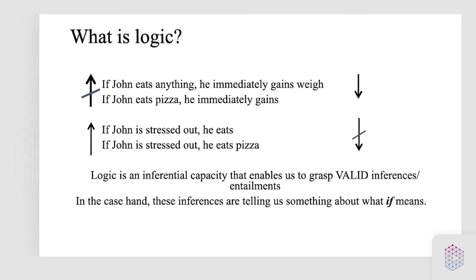In this context, the inference goes from a superset — eating anything — to a more specific set — eating pizza. Notice that here it's the opposite: if John is stressed out, he eats. This does not entail that if John is stressed out, he eats pizza. But on the other hand, if you know that if John is stressed out, he eats pizza, you thereby know that if he's stressed out, he eats. In this case, the inference goes from the specific set, the small set, to the large one. This is logic — the little voice that tells you what follows from what. And this is something about the way 'if' works. In particular, this inference pattern characterizes conditionals.